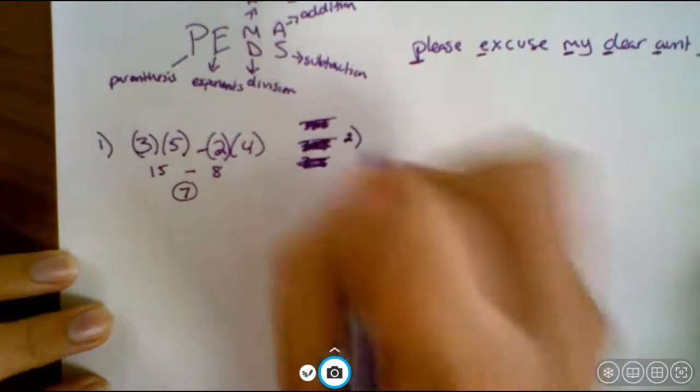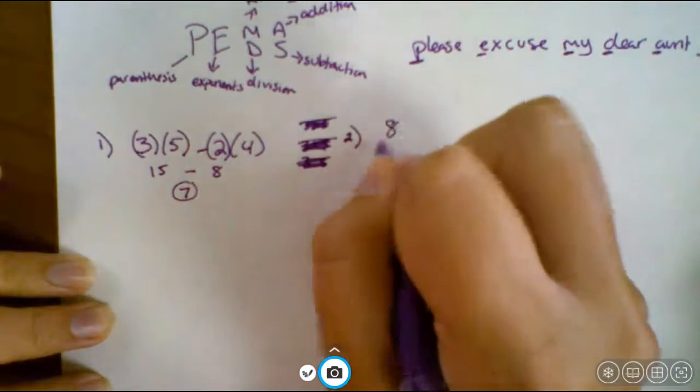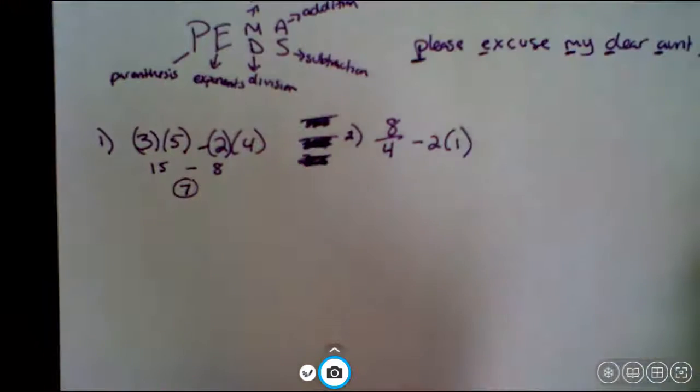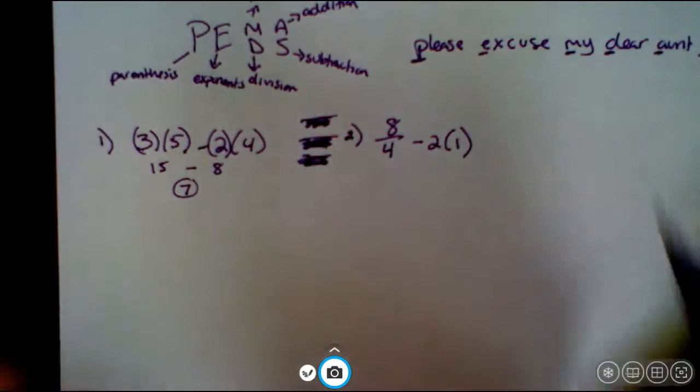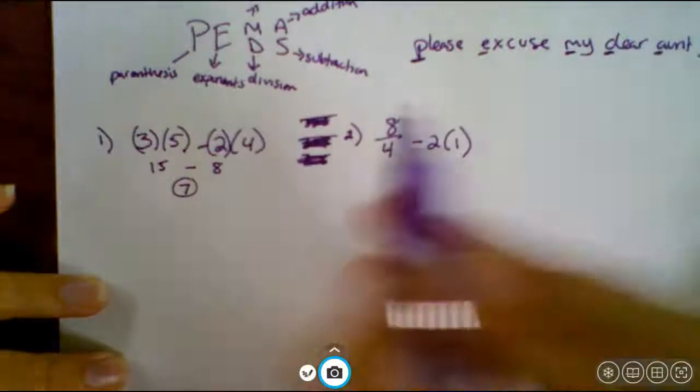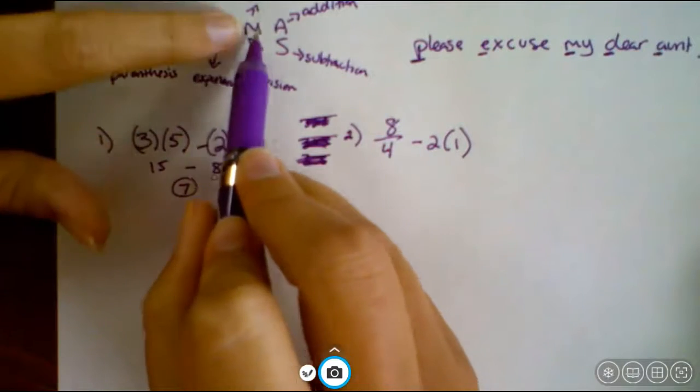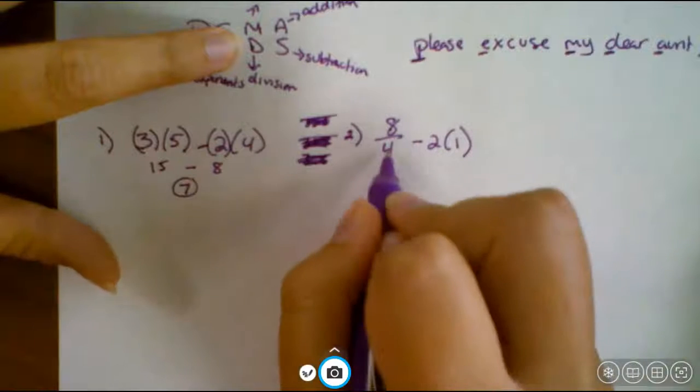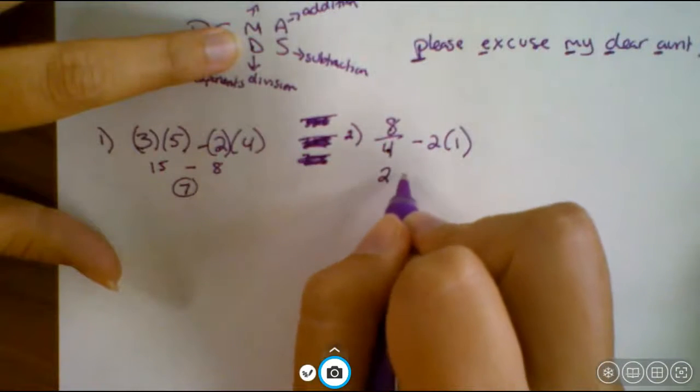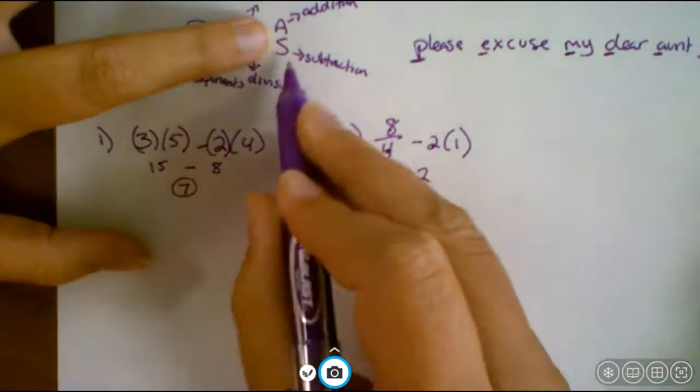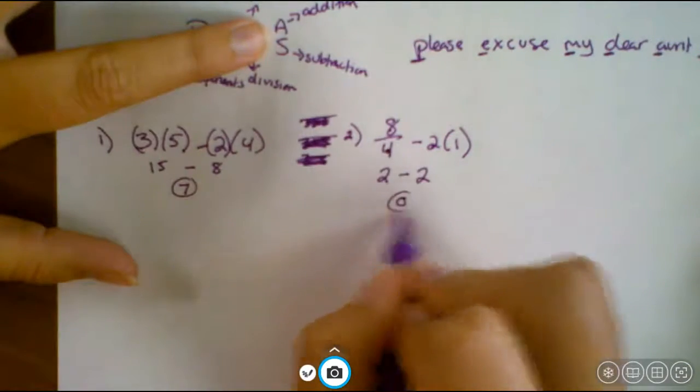Okay, the next one, we're going to do eight over four minus two times one. Again, eight over four, think of that as division. I just don't use the division sign very often, just because I don't want it to start looking like a plus sign. So we have no parentheses, no exponents. We do have multiplication division, so I'm going to do those first. Eight divided by four would be two. Two times one would be two. Now we're down to adding and subtracting, so two minus two is zero.